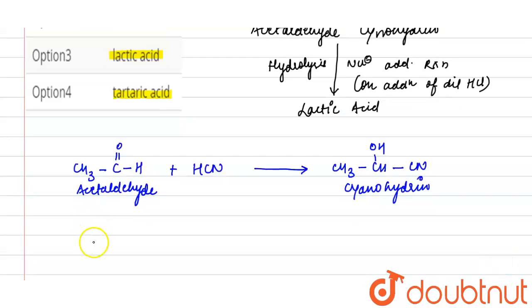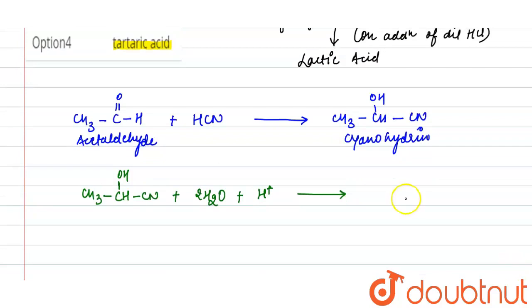Further, cyanohydrin on hydrolysis in presence of dilute HCl will form lactic acid. This is lactic acid plus NH4 positive. So here it is lactic acid, and this is cyanohydrin.